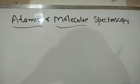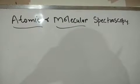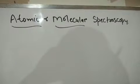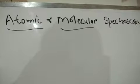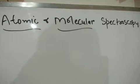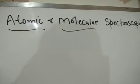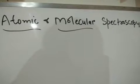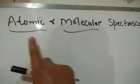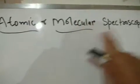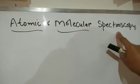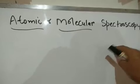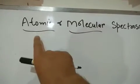Bismillah ar-Rahman ar-Rahim. Today we will talk about an important topic — Atomic and Molecular Spectroscopy. This is a basic introduction to our next classes, which are mainly related to atomic spectroscopy and molecular spectroscopy. In spectroscopy, we have the interaction of electromagnetic radiation with matter. Matter means it can be either in the form of molecules or in the form of atoms.